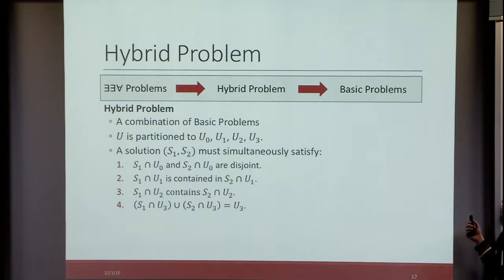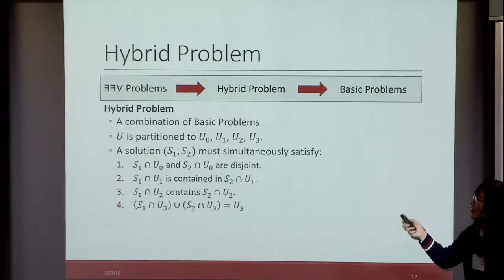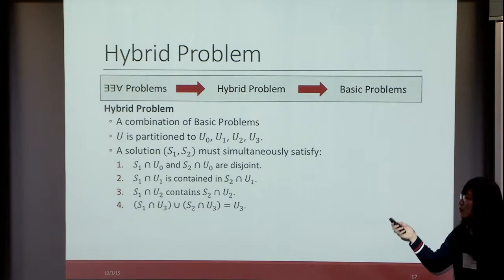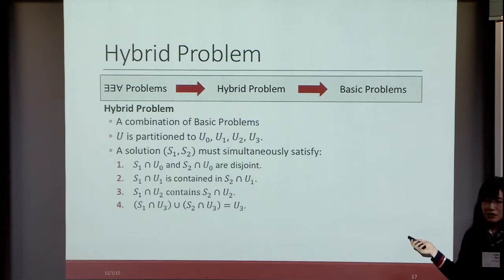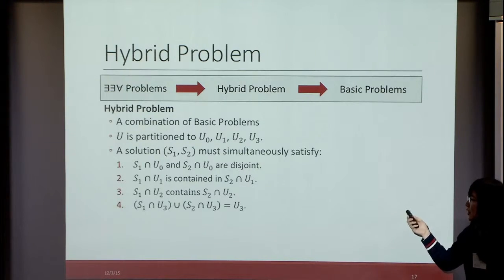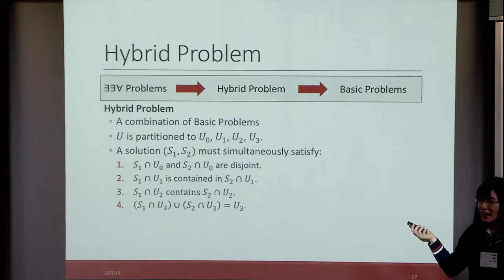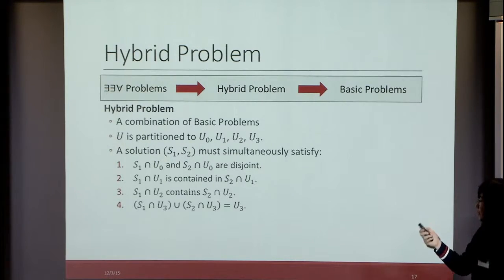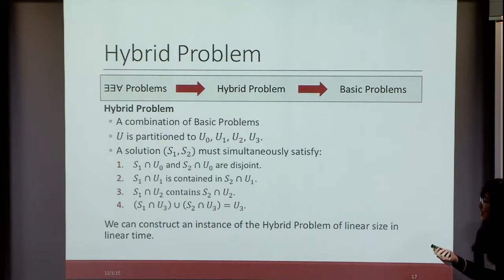The last step of this reduction is from the general exists-exists-for-all problems to the basic problems. We define a hybrid problem that connects the two problems in the middle. The hybrid problem is a combination of basic problems where the universe is partitioned into four disjoint universes. We look for a solution S1 and S2 that simultaneously satisfies four conditions: on universe U0 the sets are disjoint; on universe U1, S1 is contained in S2; on universe U2, S1 contains S2; and on universe U3, S1 and S2 cover the universe U3. We show we can construct an instance of the hybrid problem of linear size in linear time.